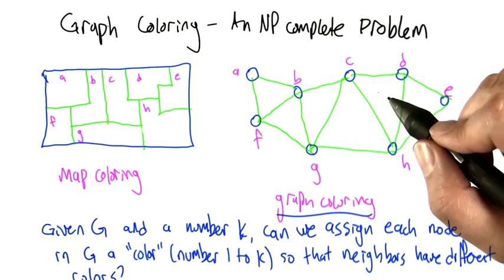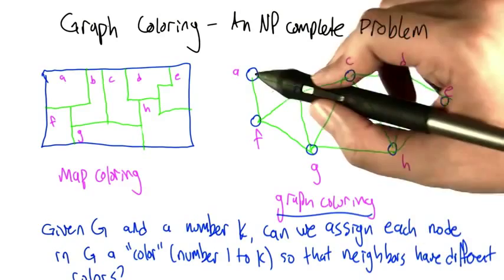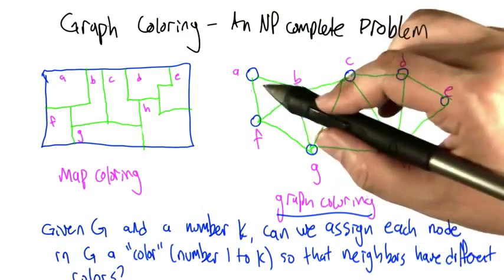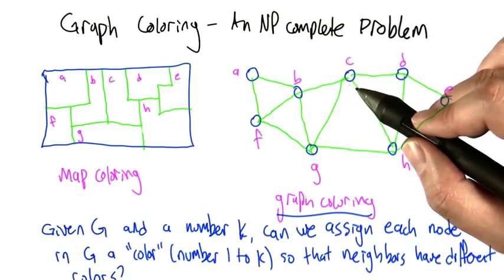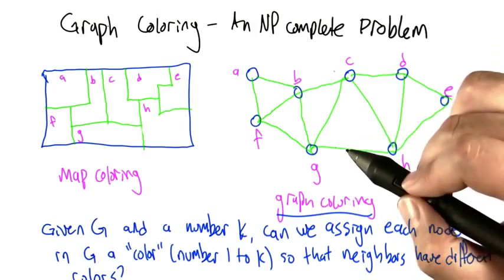the equivalent graph coloring problem is: given a graph G and a number K, can we assign each node in the graph a color, specifically some number from 1 to K, so that neighbors in the graph have different colors, have different numbers assigned to them.